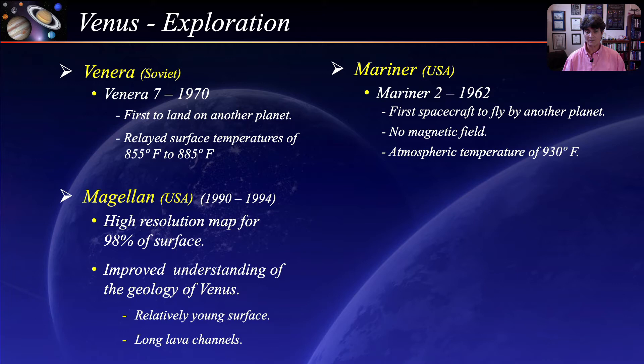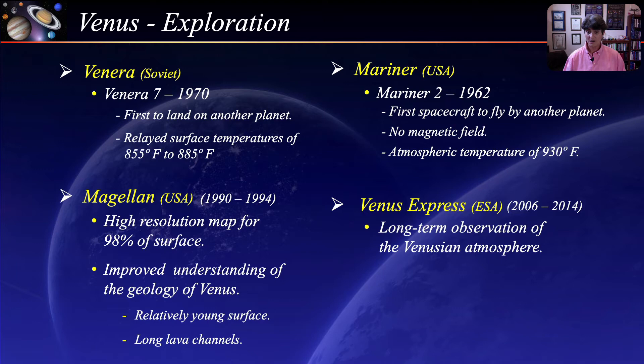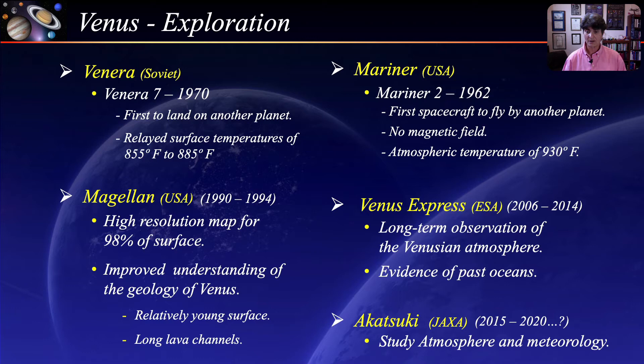More recently, the European Space Agency's Venus Express arrived in orbit in 2006 to study long-term atmospheric dynamics, with one result being evidence of past oceans. The current probe in orbit is the Japanese Akatsuki, whose mission is to study the atmosphere and meteorology of Venus. Venus entered orbit in December of 2015 and is on a current extended mission planned for the end of 2020.